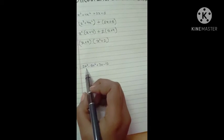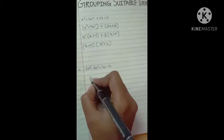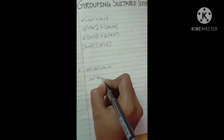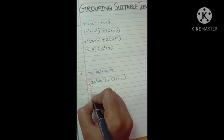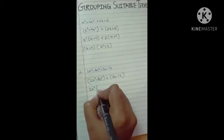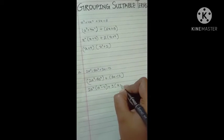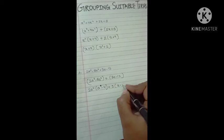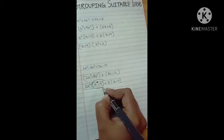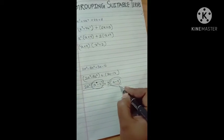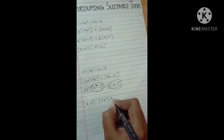The next example is 2a³ - 8a² + 3a - 12. We group the suitable terms: (2a³ - 8a²) and (3a - 12). From the first group, 2a² is common, giving 2a²(a - 4). From the second group, 3 is common, giving 3(a - 4). Since (a - 4) is common in both terms, we take it out and get (a - 4)(2a² + 3).